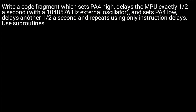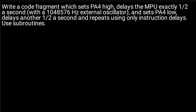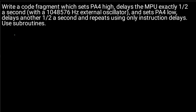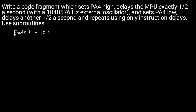Write a code fragment which sets PA4 high, delays the MPU exactly half a second with the 1,048,576 Hz external oscillator, and sets PA4 low, delays another half a second, and repeats — using only subroutines. So let's go ahead and look at that. The provided information is we have an external oscillator which is given to be 1,048,576 Hz.